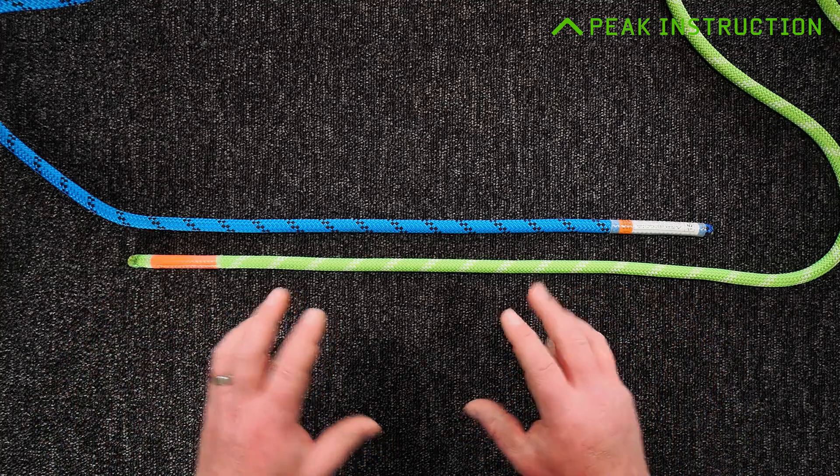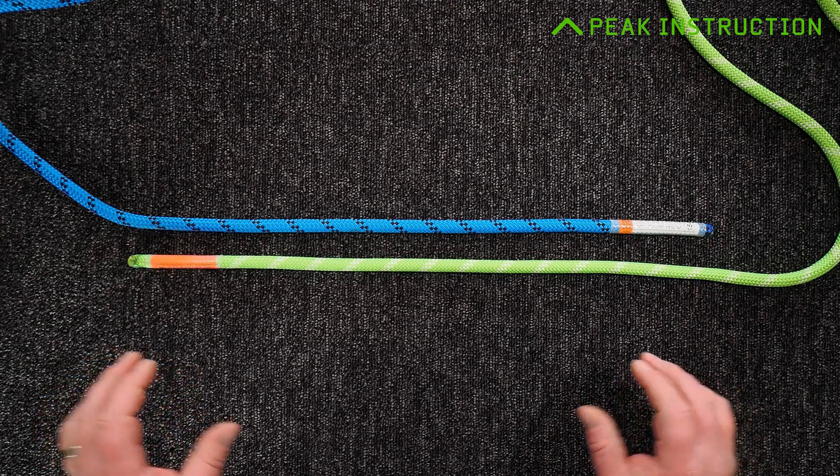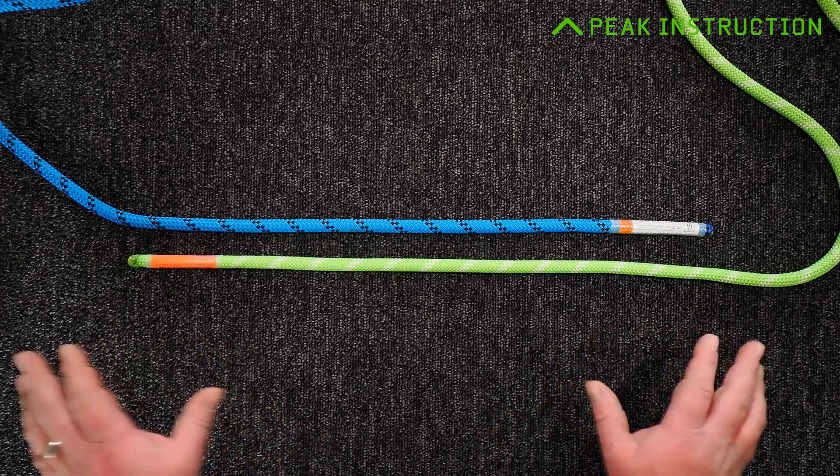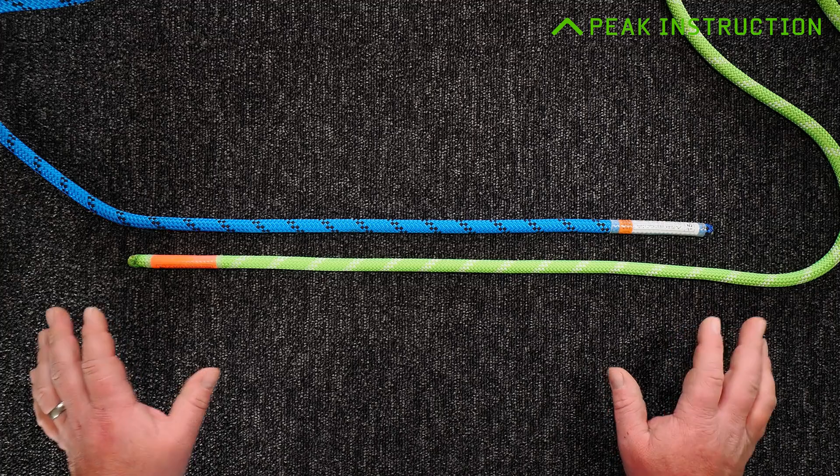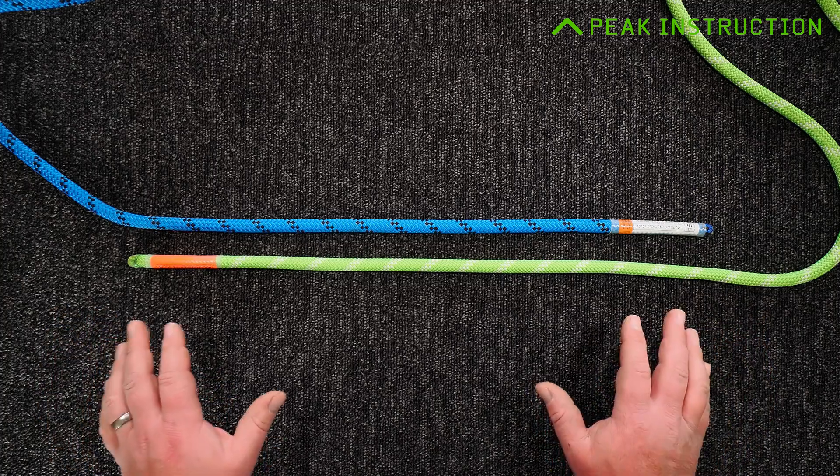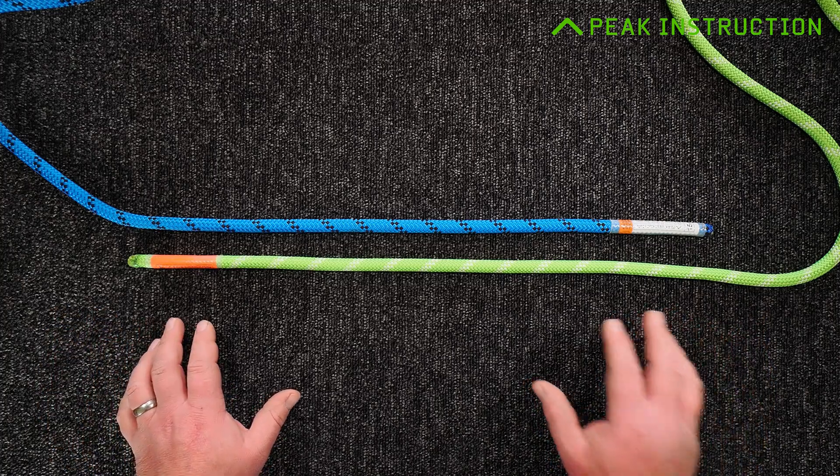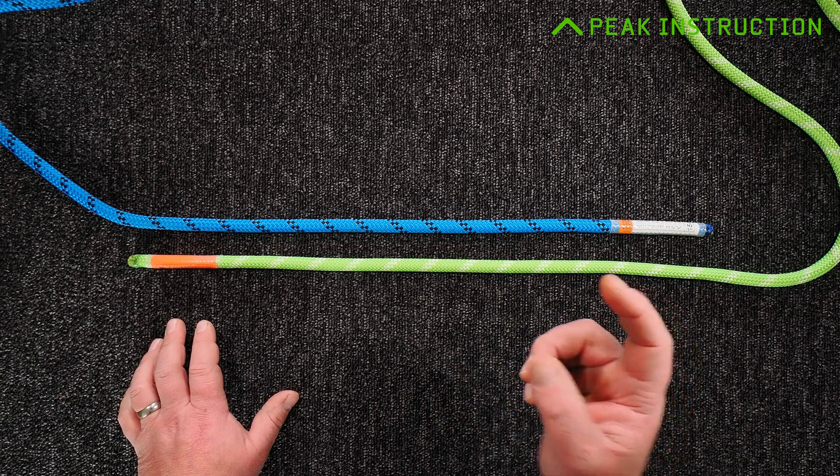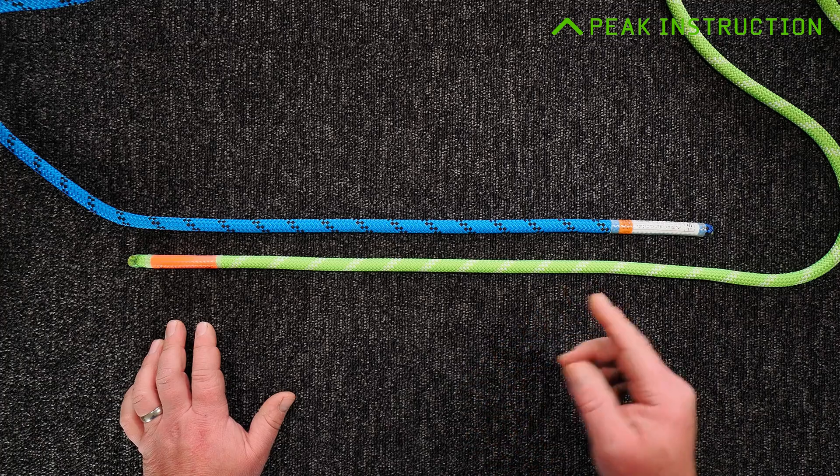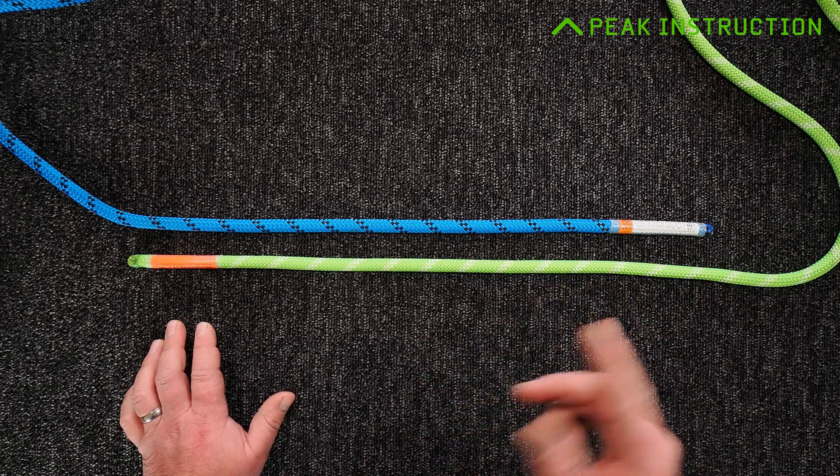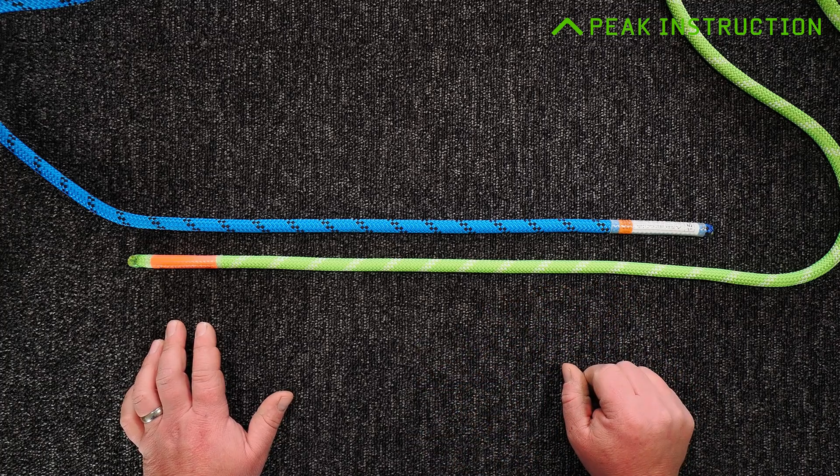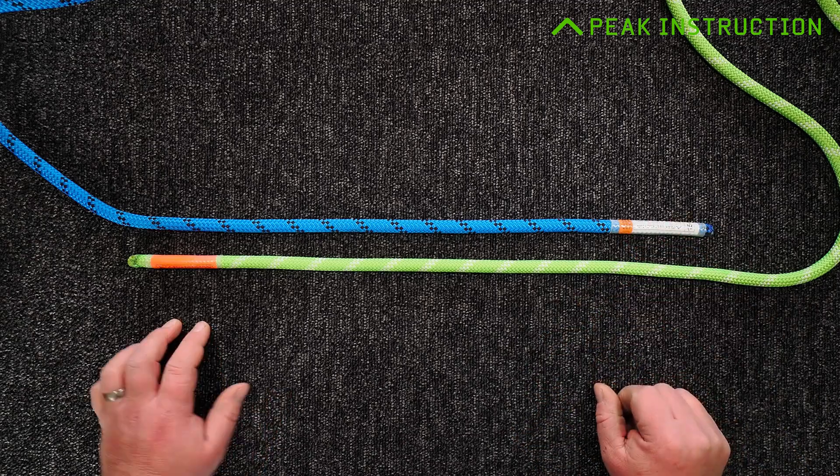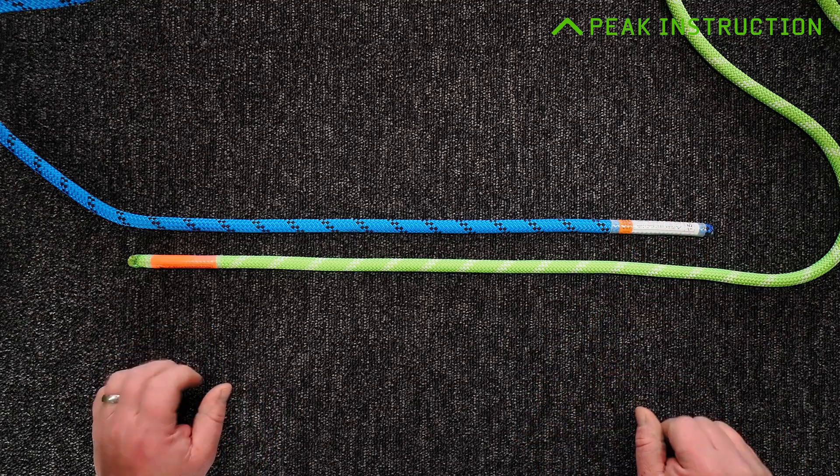There are lots of different ways to do this, some of which will be perfectly safe and appropriate. I'm just going to show you the way that I choose to do it. It gives me a very strong secure join but also produces a loop where I can attach a cow's tail while I'm doing the maneuver, so we can remove ascenders one at a time and pass them over the knot.